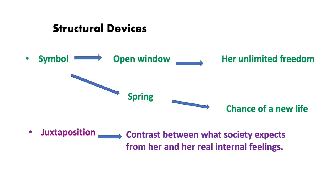Other than linguistic devices, there are some structural devices employed by the writer. One is symbolism — she has used two symbols: the open window and the spring. The open window represents her unlimited freedom, and the spring represents the chance of a new life. She also uses juxtaposition to contrast between what society expects from her and her real internal feelings.